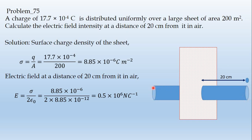The Gauss's law surface integral value is equal to q by epsilon₀. This is Gauss's law, and the formula for electric field is E equals sigma divided by 2 epsilon₀.